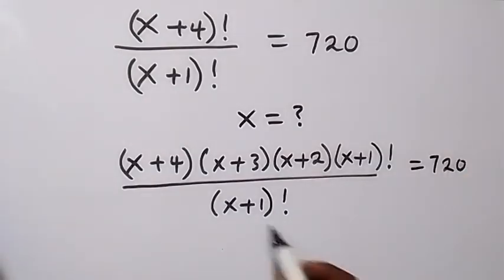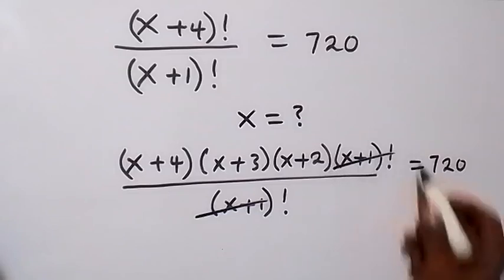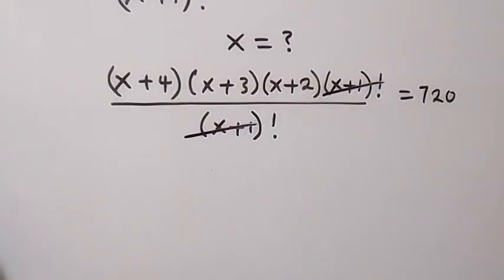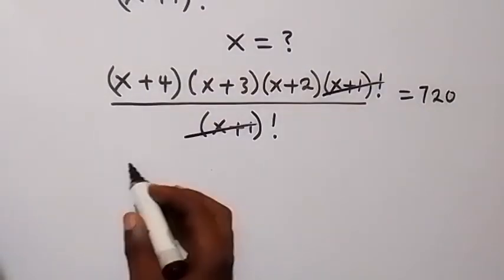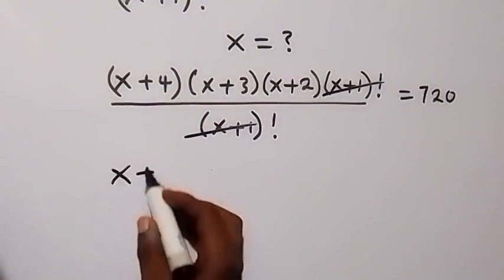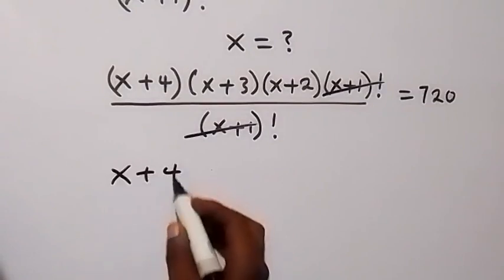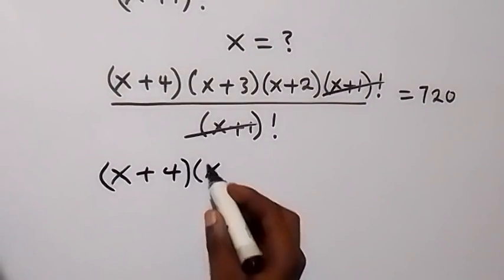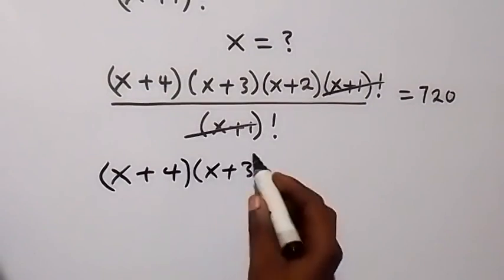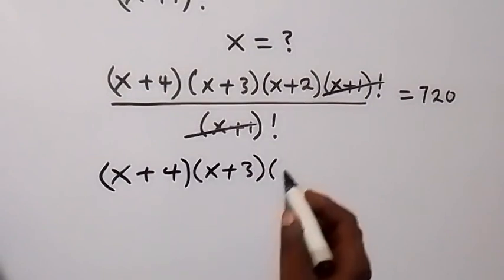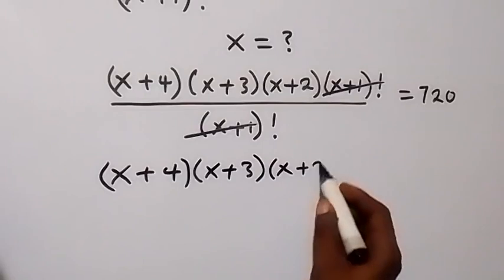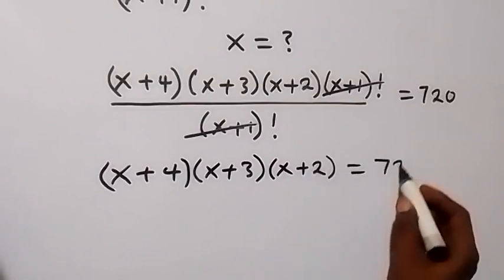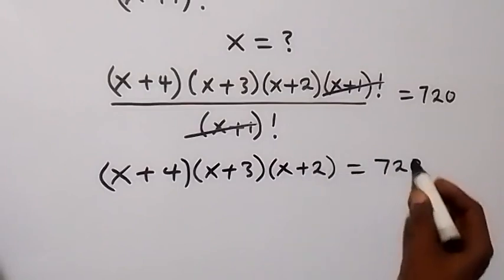The (x+1)! will cancel each other. What we have left is (x+4) times (x+3) times (x+2), which is equal to 720.